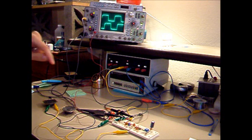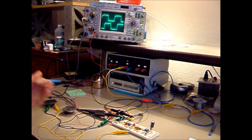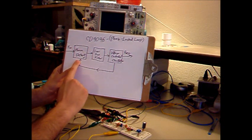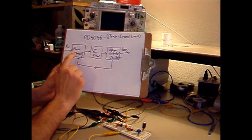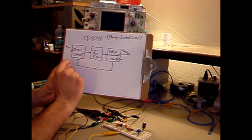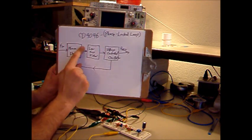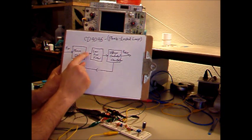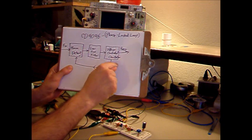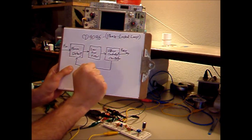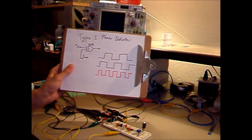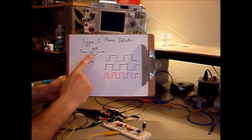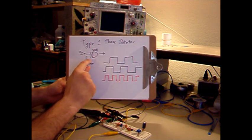Let's explain what the two different types of phase detectors are and their advantages and disadvantages. The CD4046 happens to have both a phase detector and a voltage-controlled oscillator, but the phase detector is generally the more difficult part to build. Many phase-locked loop chips will only have the phase detector and expect you to build your own low-pass filter and VCO, which really isn't that hard. First, the type 1 phase detector.